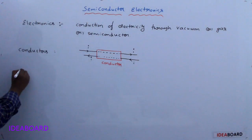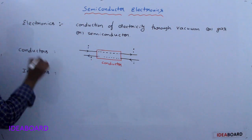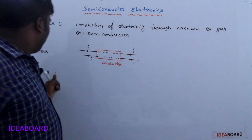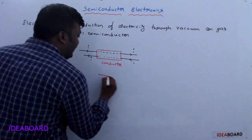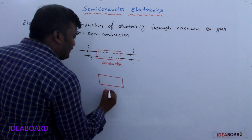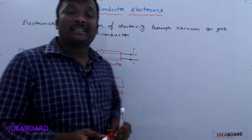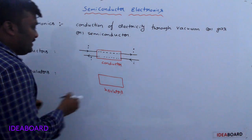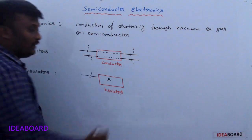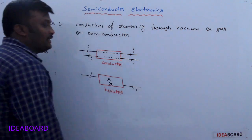Now in case of insulators, insulators do not contain any free electrons. Whenever insulators do not contain any free electrons, they do not allow current through them. That means if you want to send current through an insulator in any direction, it does not allow.